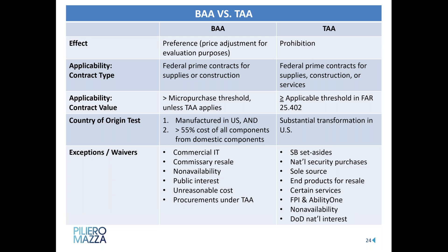Notably, one of the very important exceptions under TAA is that TAA does not apply to small business set-asides — if it's a small business set-aside, TAA won't apply even if it's above the dollar threshold, and the BAA requirements will apply instead. TAA also doesn't apply to acquisitions of arms, ammunition, war materials, or purchases indispensable for national security or national defense, certain sole source acquisitions, acquisitions for end products for resale, acquisitions from Federal Prison Industries and AbilityOne, or for certain services — which varies by trade agreement and may cover transportation, utilities, R&D, or services supporting military services overseas.